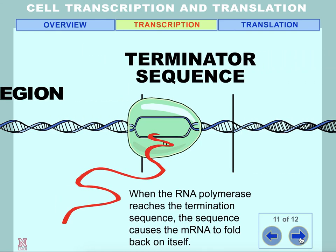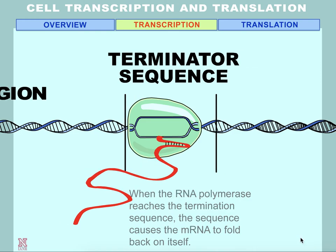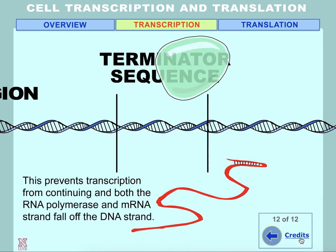When the RNA polymerase reaches the termination sequence, the sequence causes the mRNA to fold back on itself. This prevents transcription from continuing, and both the RNA polymerase and mRNA strand fall off the DNA.